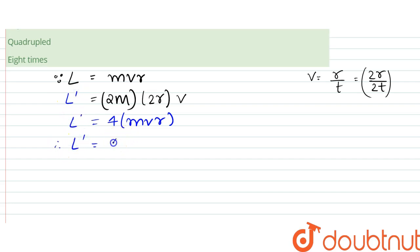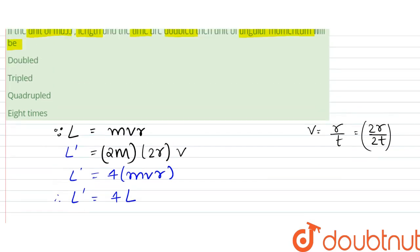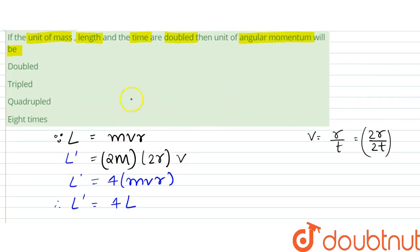Therefore, L dash would be equal to 4 times L. So that means that the unit of angular momentum will be quadrupled, right. That increases by 4 times. That is, C option is our answer. Thank you.